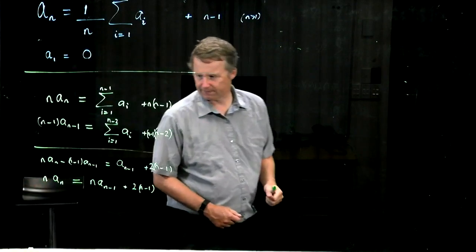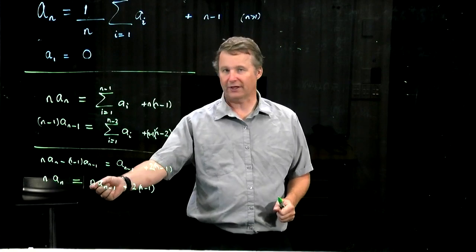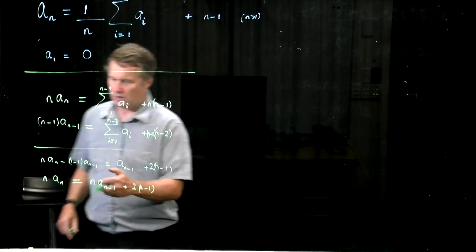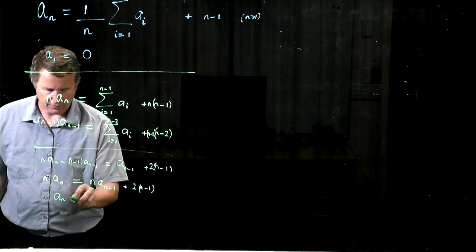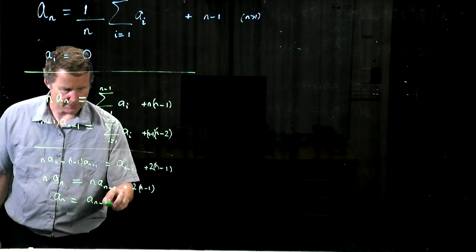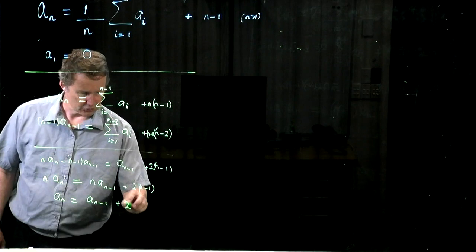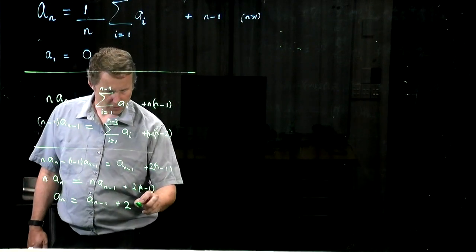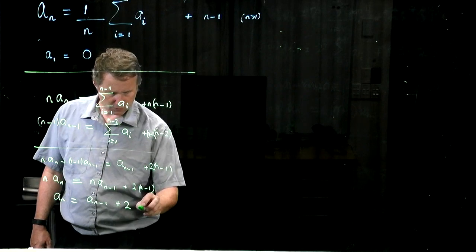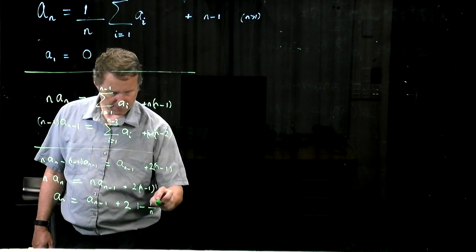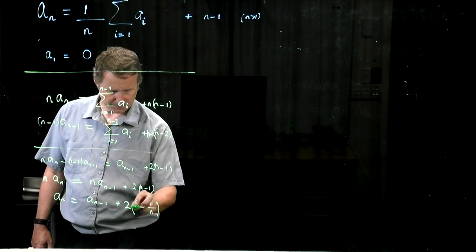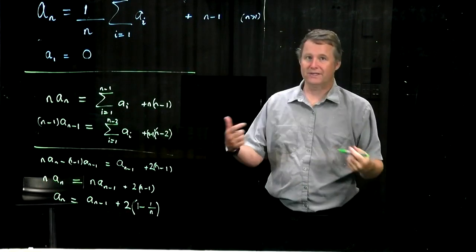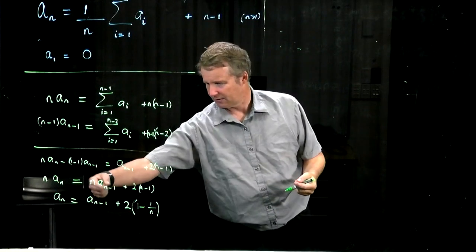Whereas before, we had an n plus 1 over here, it made it more complicated. Now everything is very simple. Dividing through, a_n is a_{n-1} plus 2 times 1 minus 1 over n. And that's for n bigger than 1. So we can simply iterate that from the top down,